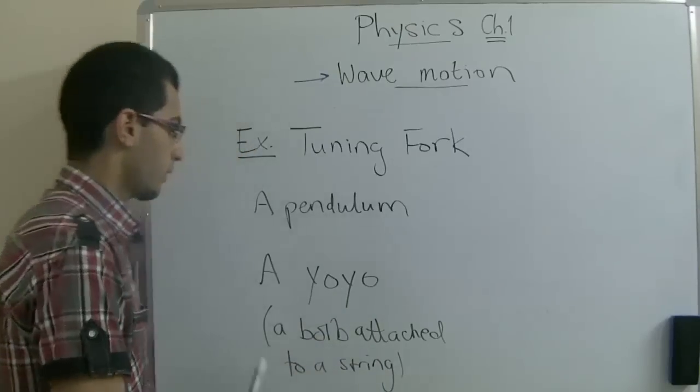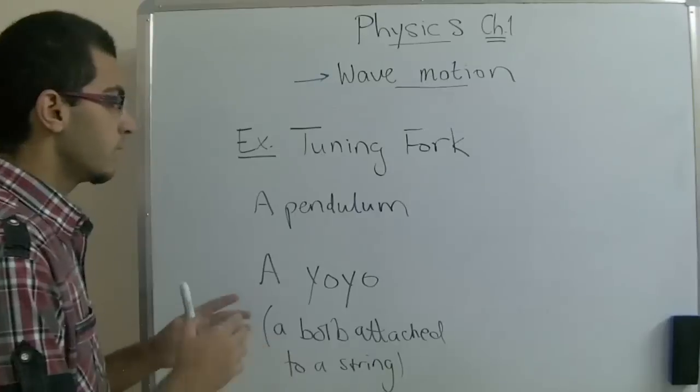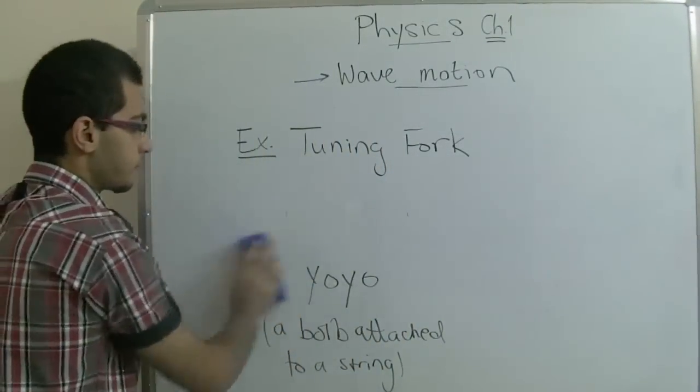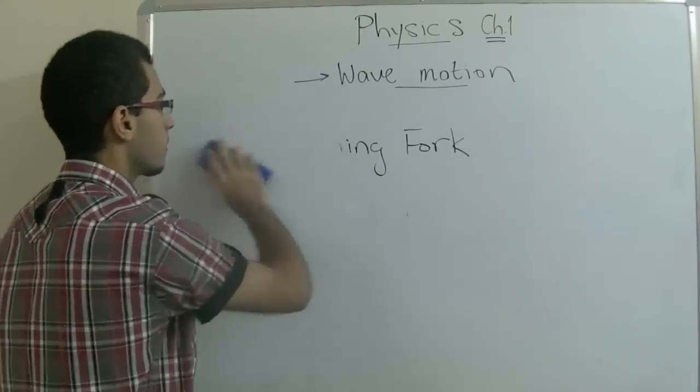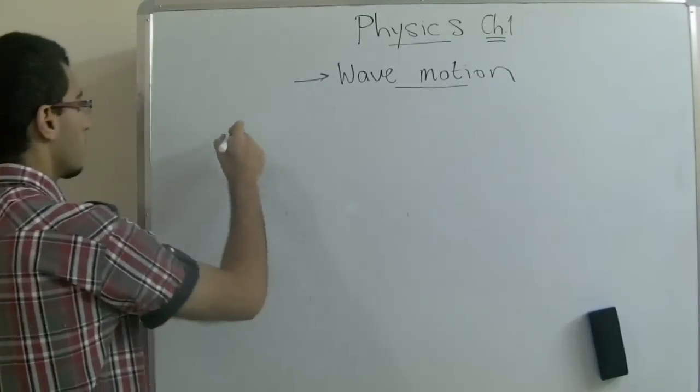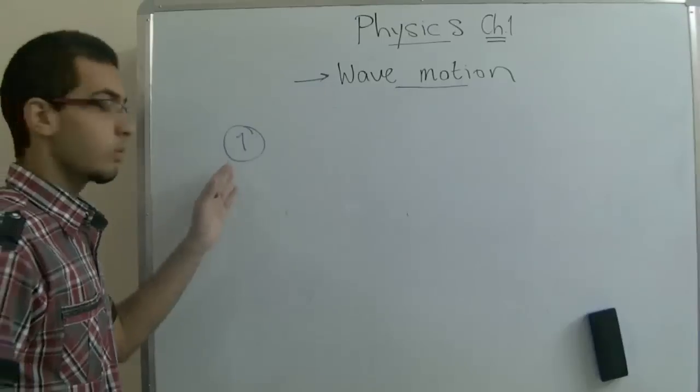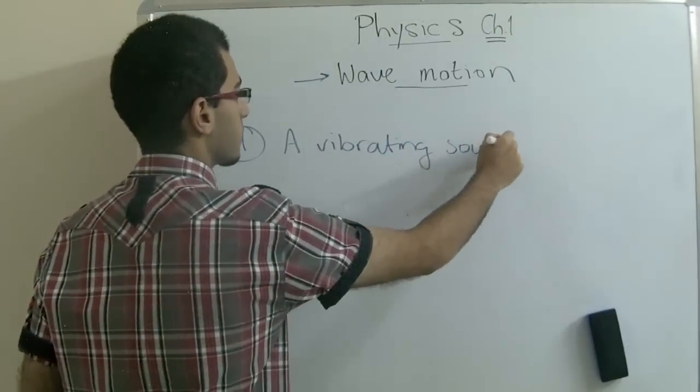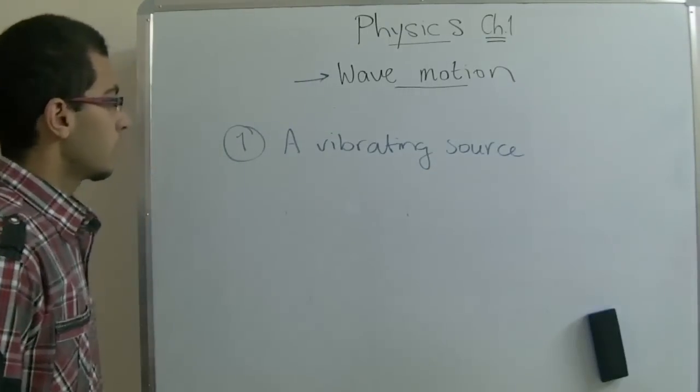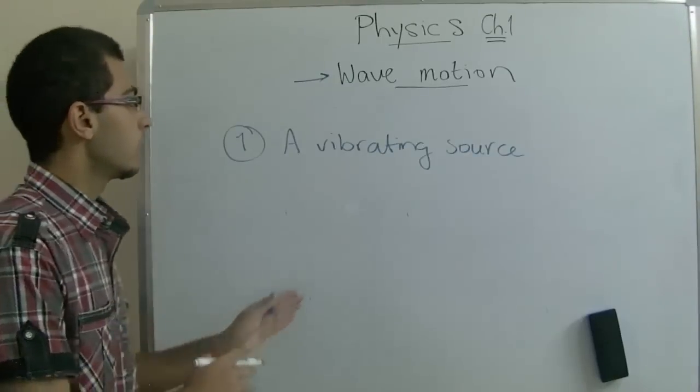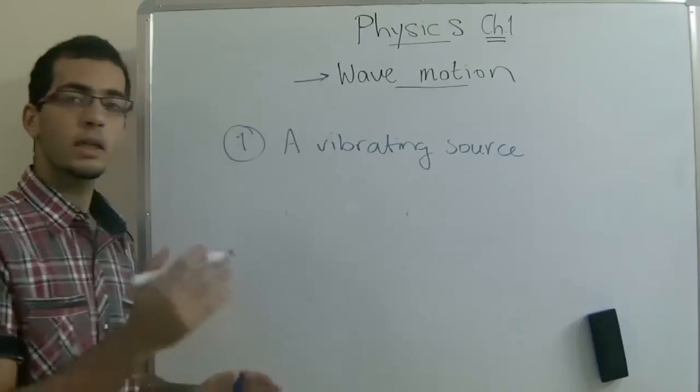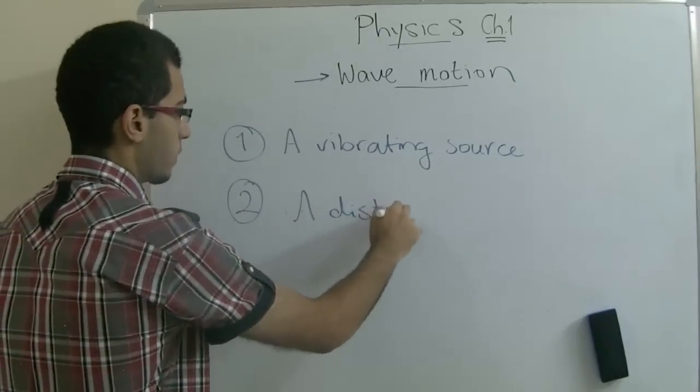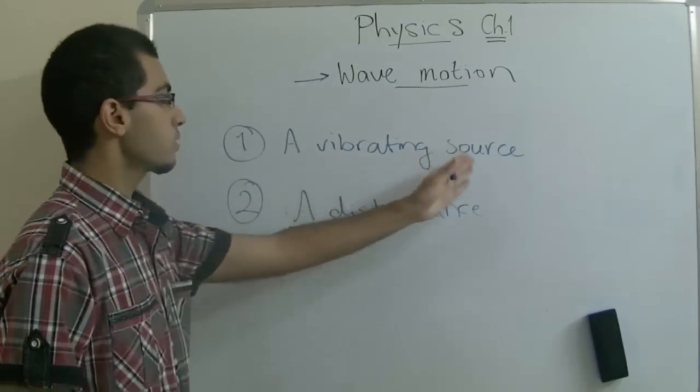From all of this that I have just mentioned, we can detect the requirements that are needed for a mechanical wave to be carried out properly. First, the mechanical wave needs a vibrating source. Like when somebody throws a pebble in the water, the pebble is considered as a vibrating source. When it touches the water, it produces some vibrations. These vibrations make a disturbance in the surface of water.